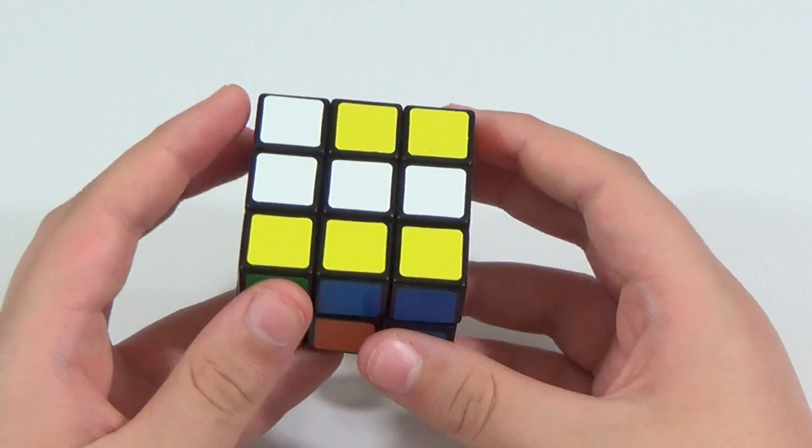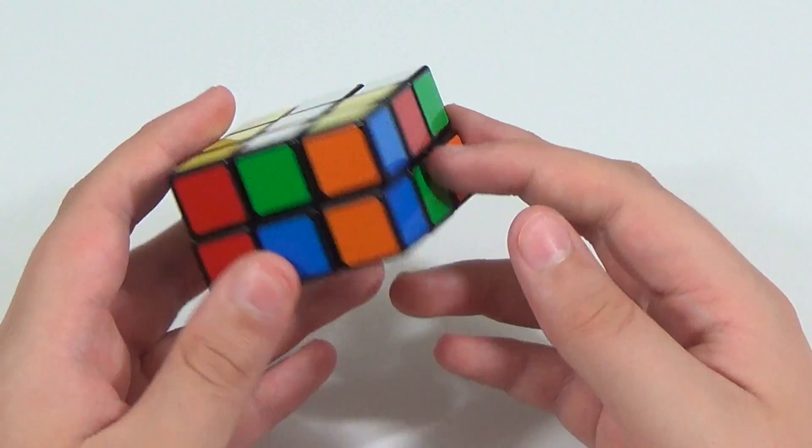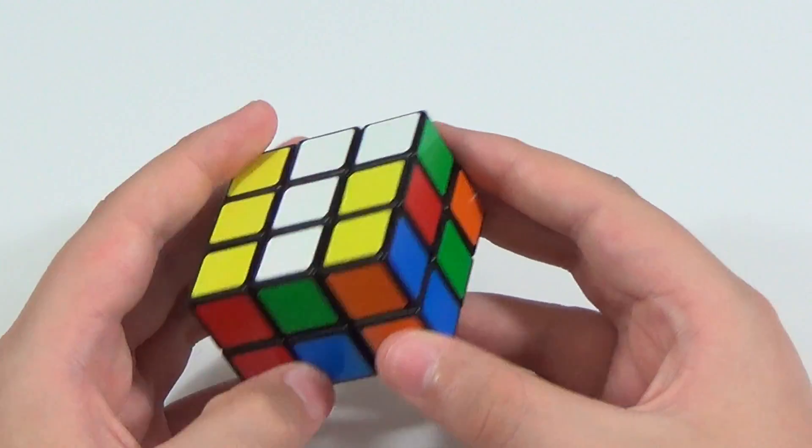Okay, so step one, which is cross. This is by far the easiest step and it's completely intuitive. You just need to make sure to get your color scheme right.